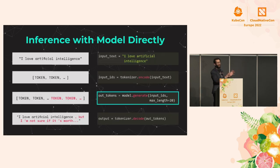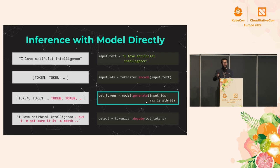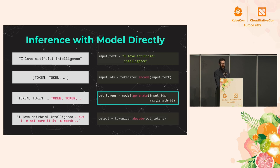Under the hood, we provide a text input — in this case 'I love artificial intelligence.' We convert this text into something the model can understand by tokenizing it, converting the string into a bunch of tokens. We pass those tokens to the model, which generates one token at a time. We can take the most likely next token or use the generate function to find the most likely series of tokens. Then we decode the output back to a human-readable string and return it.